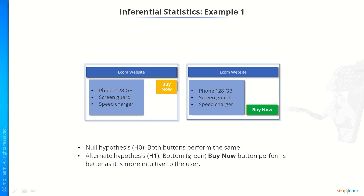Now, when we apply the hypothesis, if both buttons perform the same, it is a null hypothesis. If the green button buy now performs better, it is an alternative hypothesis. Why does it perform better? Because it is more intuitive to the user.